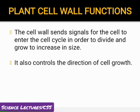سیل وال ایک ریسیپٹر کے طور پر بھی فنکشن کرتی ہے۔ جب سیل فولی میچور ہو جائے گا — یعنی اپنے سائز میں انکریز کر جائے گا — تو سیل وال اسے ڈویژن پروسس کے لیے سگنل کرتی ہے۔ سیل وال سیل کی گروتھ کو بھی کنٹرول کرتی ہے: پرائمری گروتھ میں سیل لینتھ وائز انکریز کرتا ہے، سیکنڈری گروتھ میں سیل گرتھ وائز انکریز کرتا ہے۔